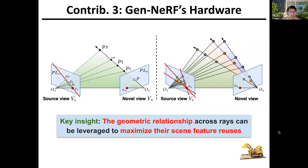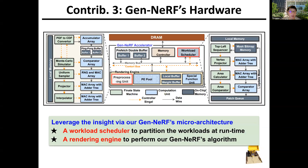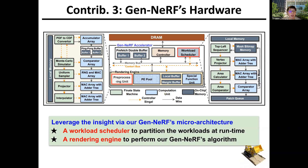On the hardware side, our key insight is that the geometric relationship across different camera rays can be leveraged to maximize their feature reuses. In light of this, we develop our GenNerf microarchitecture, which features a workload scheduler to analyze the geometric relationship across camera rays and partition the workloads correspondingly at runtime, as well as a rendering engine to perform our GenNerf algorithm.